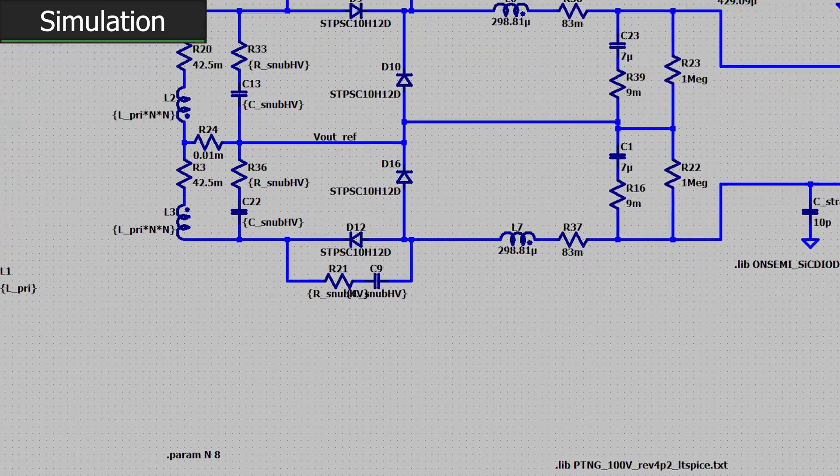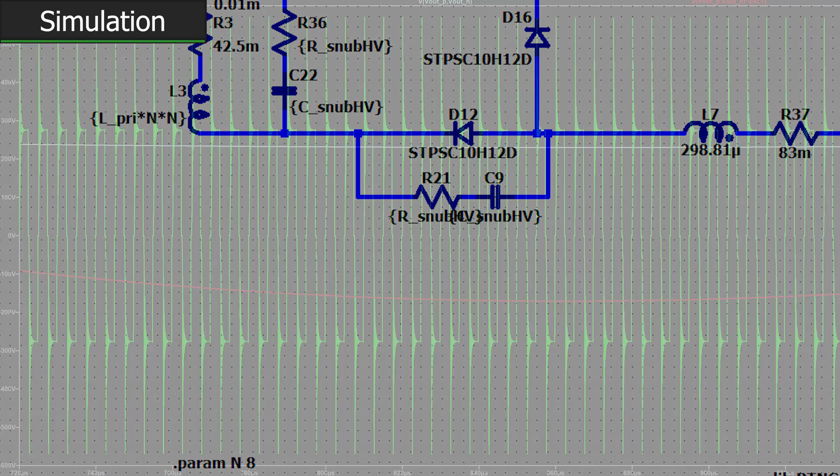Either reduce leakage inductance, bump up the turns ratio, or both. We used some of that extra voltage ringing headroom that we gained by splitting our winding into two to bump this design up to a 1 to 16 transformer. What do we see now?